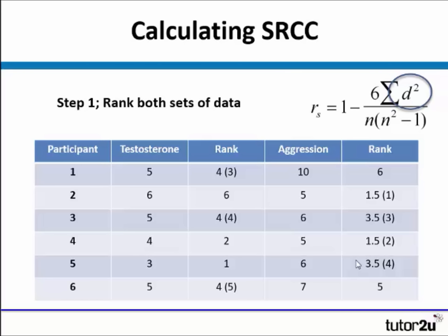Ranking aggression: our smallest number was 5, so that would take positions 1 and 2, so we give them an equal position of 1.5. We would then look for the next score, which is 6, and they get the ranks of 3.5, because they would take positions 3 and 4. Then we have rank 5 for 7, and rank 6 for 10.